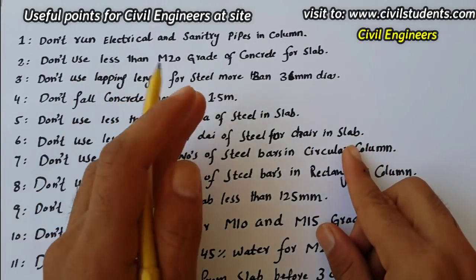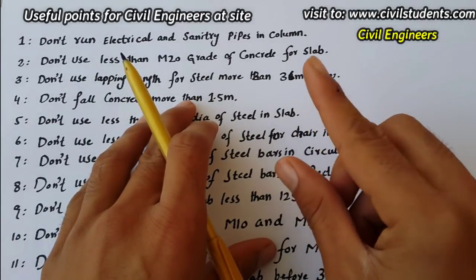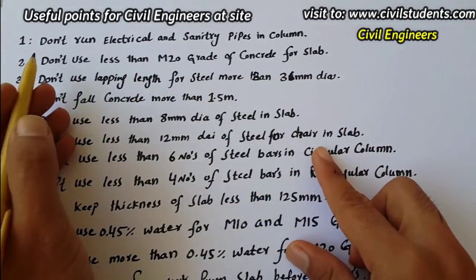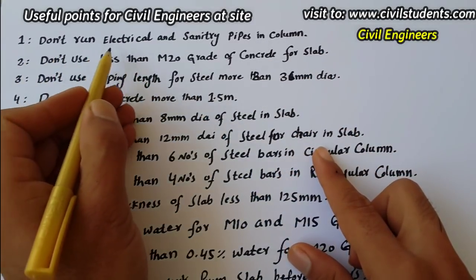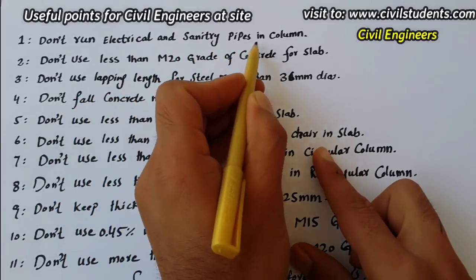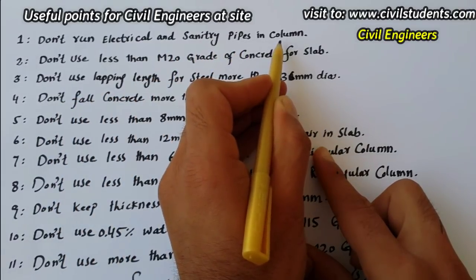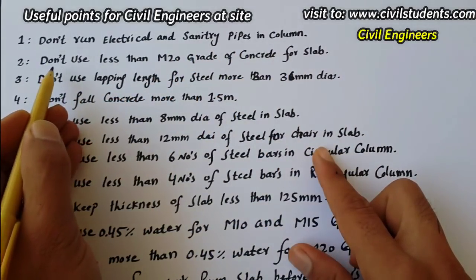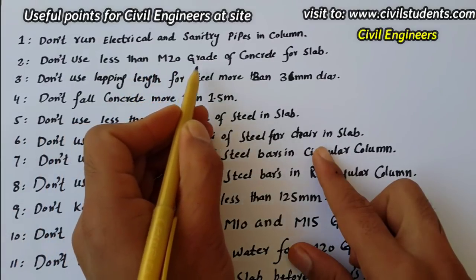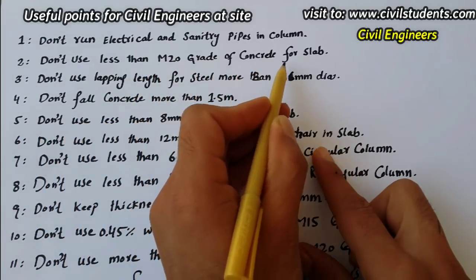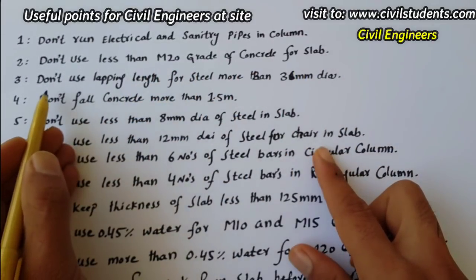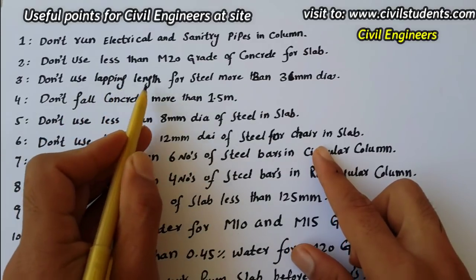So the first point: don't run electrical and sanitary pipes in a column — this is an important point. And don't use less than M20 grade of concrete for a slab.